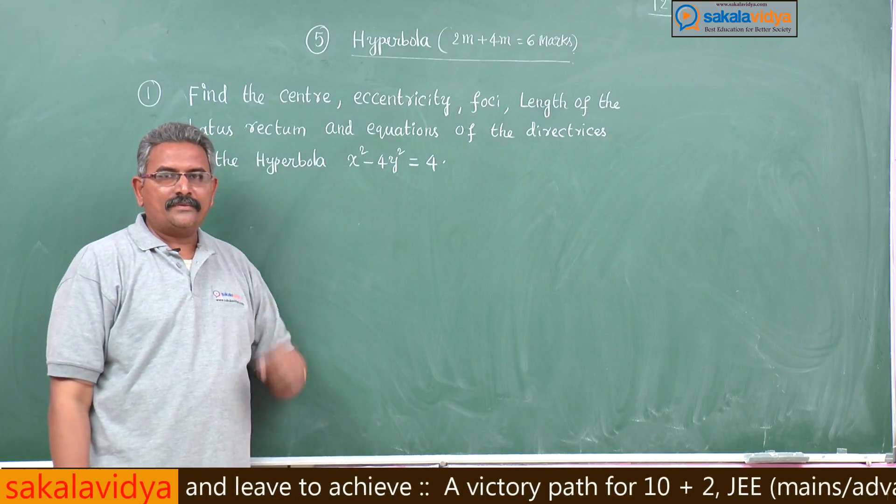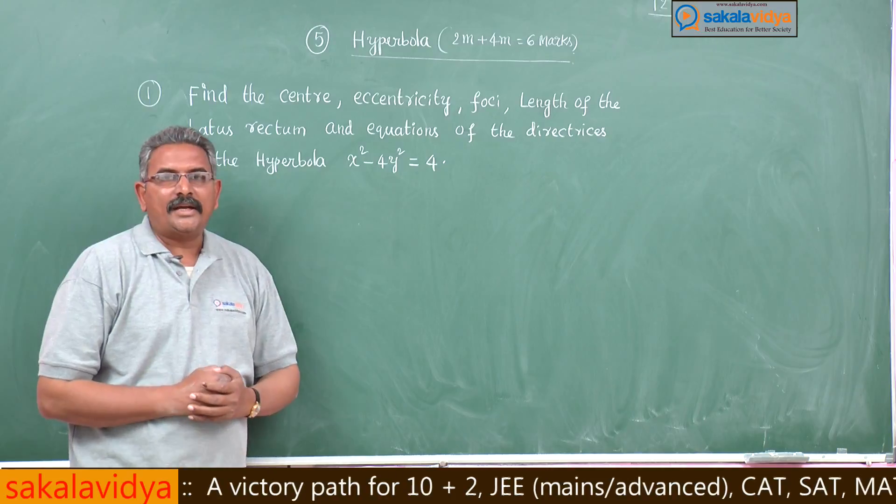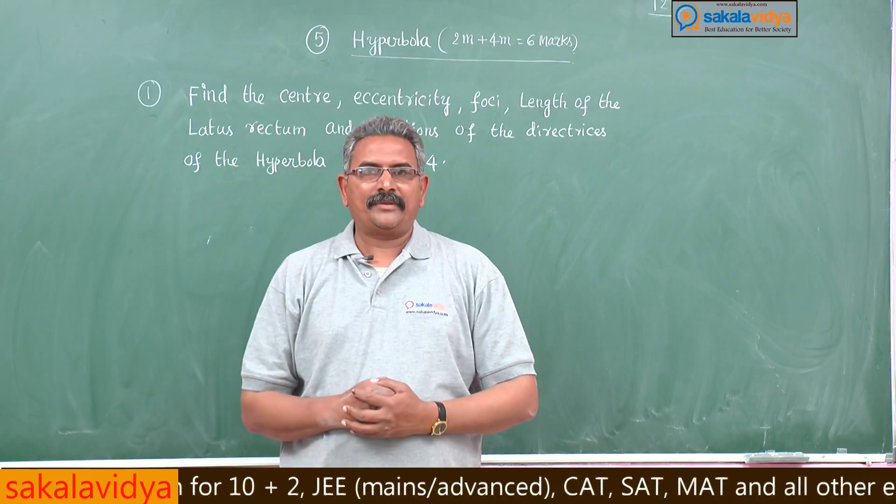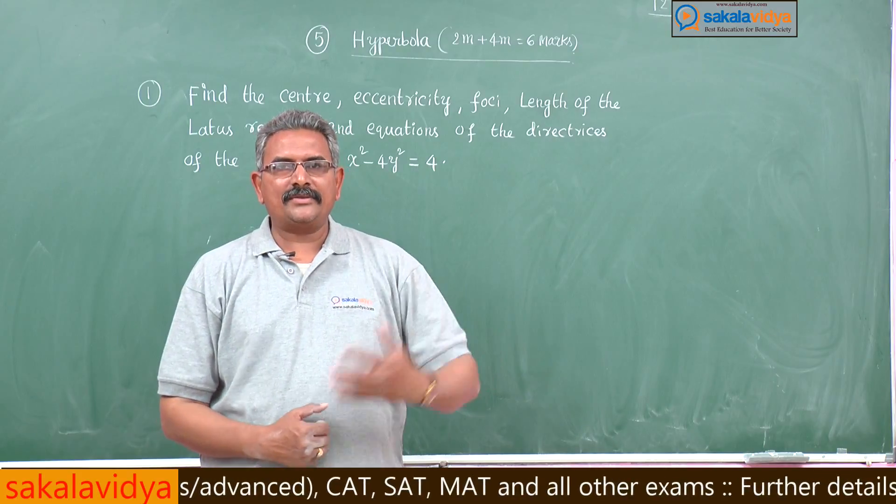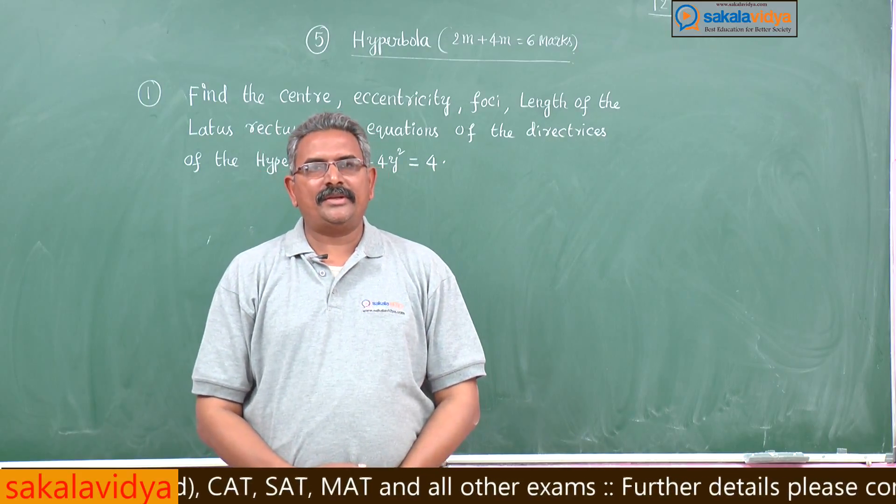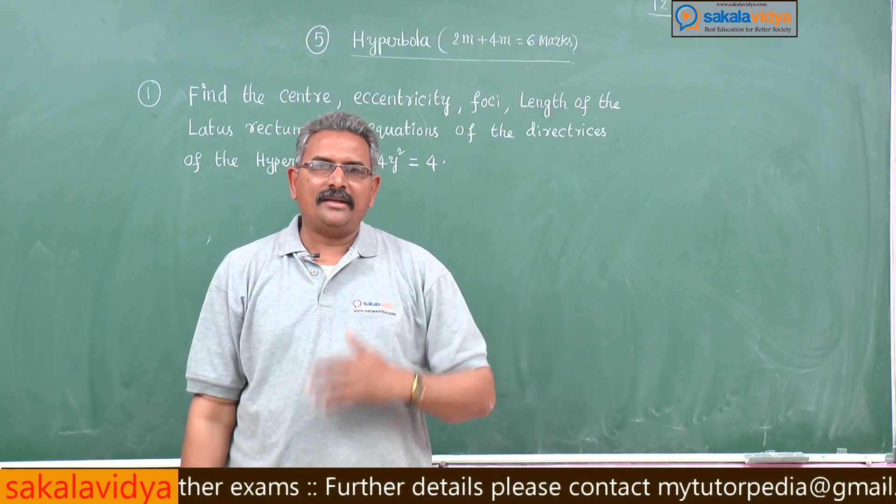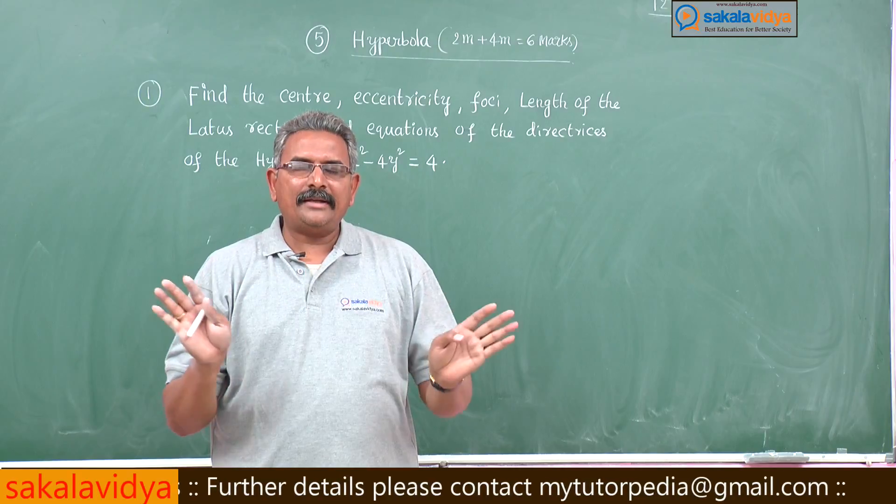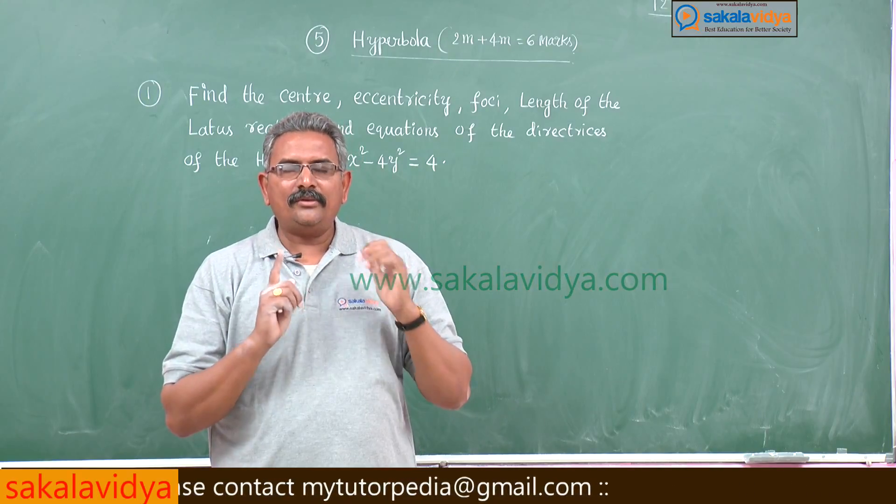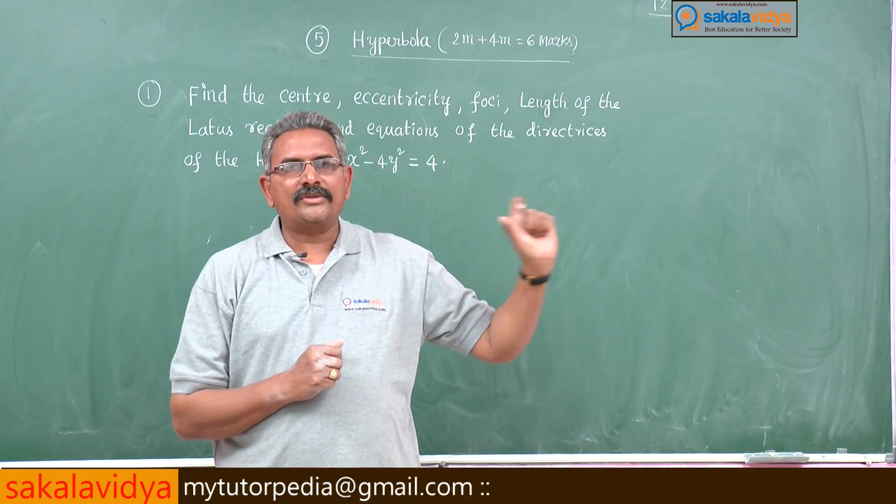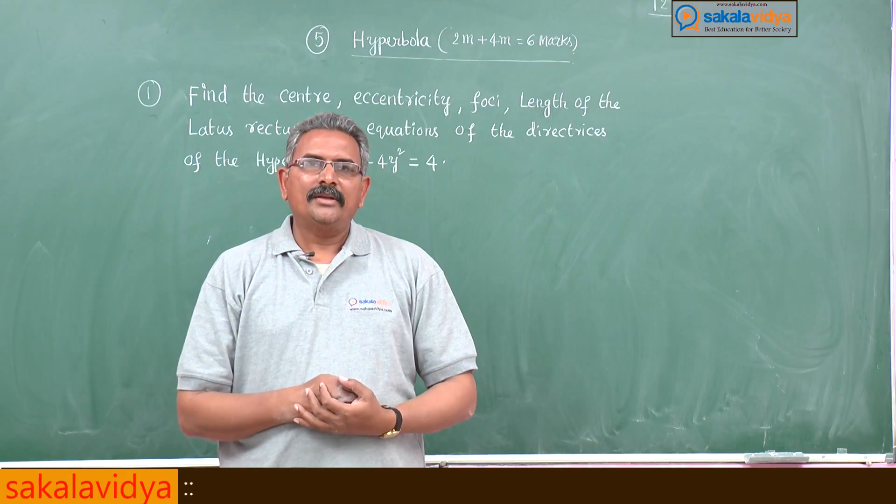First step is we have to put it in the standard form. What is the standard form of the hyperbola? The standard form is x square by a square minus y square by b square is equal to 1. From this we get a square value and b square value. Here it does not matter whether a greater than b or a lesser than b. Center will be 0 comma 0.